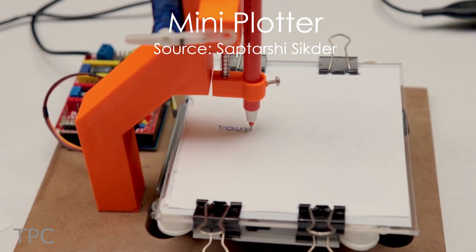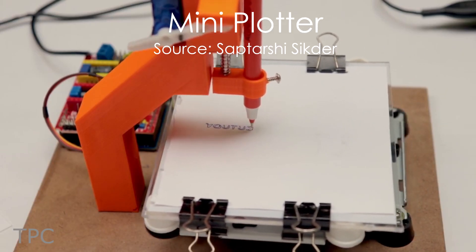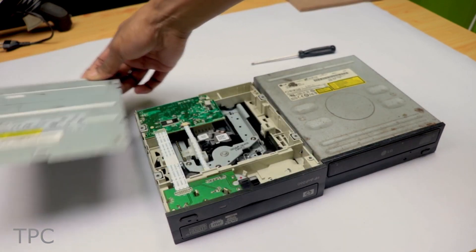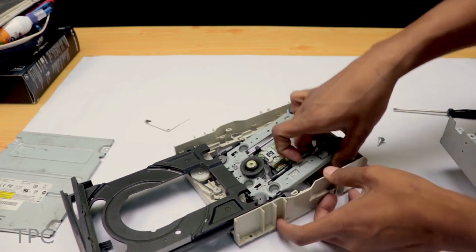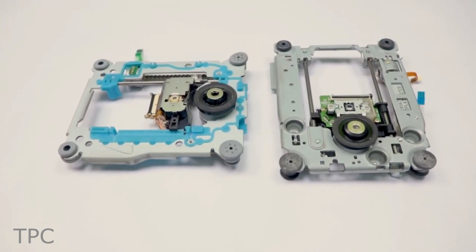If you love compact designs for CNCs, then you will love this one. To make this plotter you will require two DVD writers. Extract the motors and other moving parts necessary for the CNC machine.